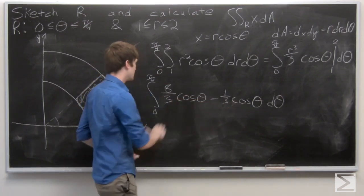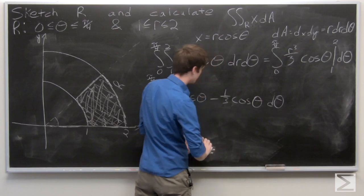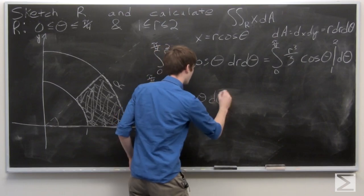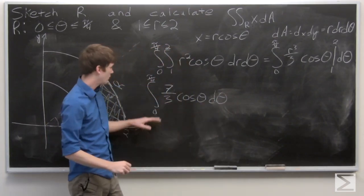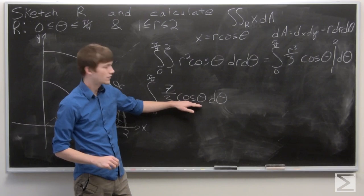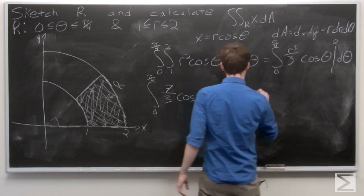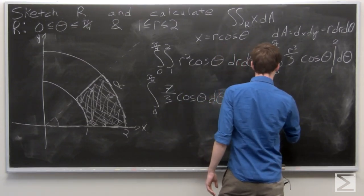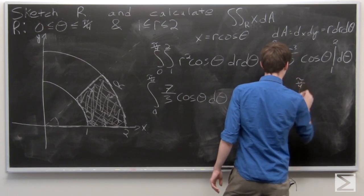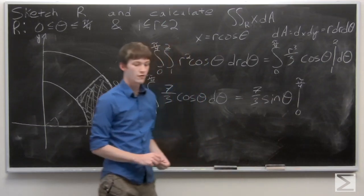So we have 7 thirds cosine theta dθ, evaluated from 0 to pi over 4. We know that the integral of cosine theta is sine theta. So we get 7 thirds sine theta, evaluated from 0 to pi over 4.